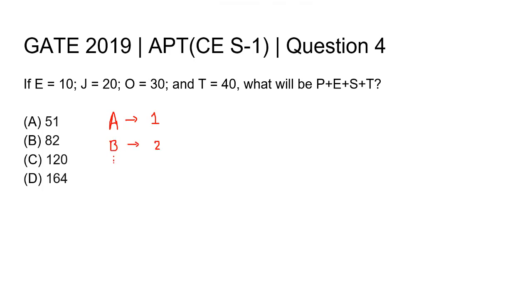If we keep going on like that, alphabet E is the fifth letter, similarly J is the tenth letter, O is the fifteenth letter, and T is the twentieth letter. Now according to the equation, E equals 10.